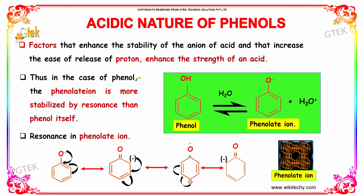In the phenolate ion, the O-minus replaces the double bond character and shifts the double bond. This continues shifting until it reaches the final position. All four resonance structures are in equilibrium — this is resonance. This is how the phenolate ion is formed.